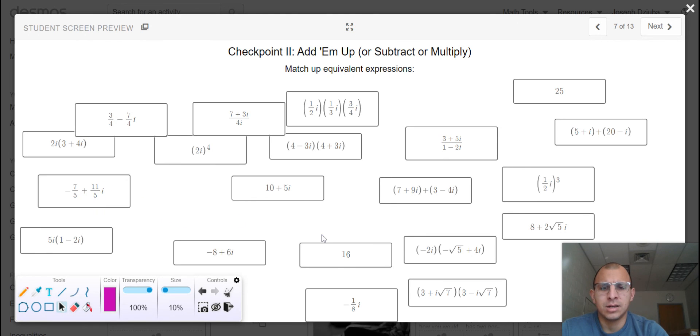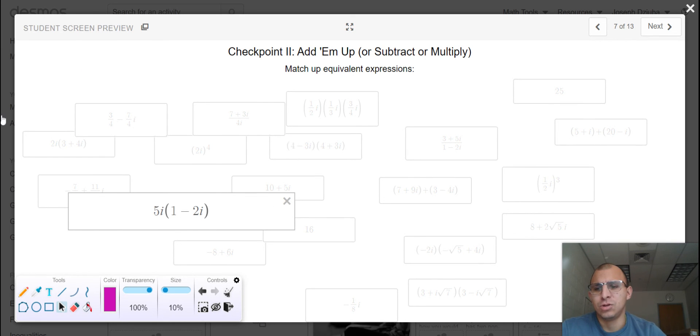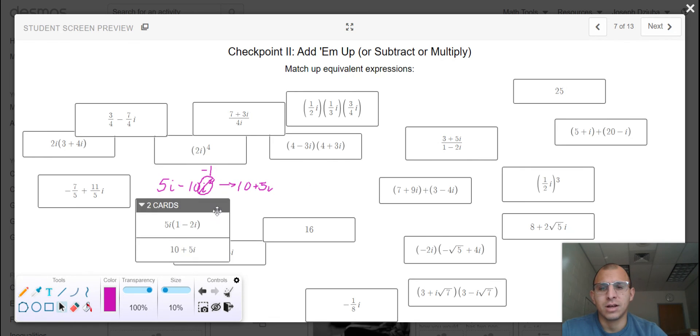All right so in this case I could take something like, let's say, what could I take? Let's go with this one here, 5i times 1 minus 2i. If I were to distribute this, this would distribute and be 5i minus 10i squared. But in the previous slides once again we were informed that i squared is really a negative 1, so this is negative 10 times negative 1. So our final total is 10 plus 5i. If you wrote it as 5i plus 10 you would not be incorrect, but this card and this card are equivalent expressions and you're tasked with doing that with the rest of them so we can develop a bit of fluency here.